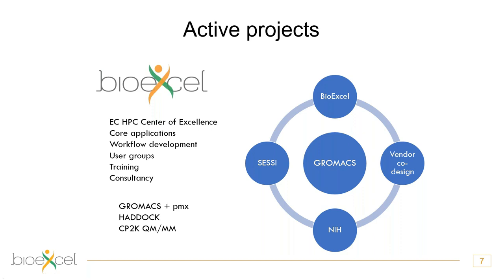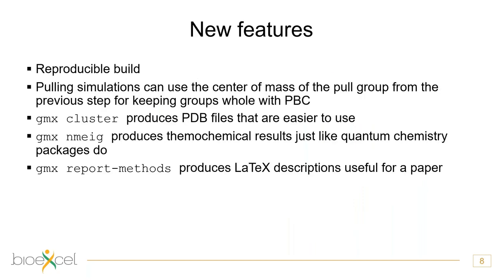In GROMACS 2019 we added and enhanced several features. We received feedback from the Reproducible Build project associated with Debian that our build kept track of metadata about the computer on which GROMACS was built, which might differ from the one it runs on. We took their advice and removed that, enabling GROMACS builds to be fully reproducible — so you can know that a particular scientific simulation used a particular version of GROMACS built in a particular way, contributing to the overall effort of reproducible science.